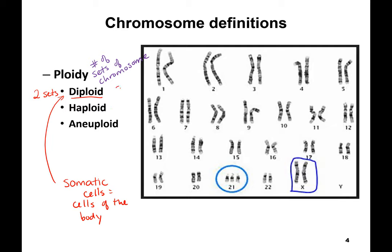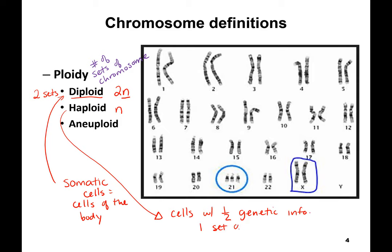Diploid is represented by 2n. Haploid is represented by n. Haploid means cells with half of the genetic information — one set of each chromosome. So in a haploid cell, you would only have one chromosome 1, one chromosome 2, one chromosome 3, and one X chromosome.